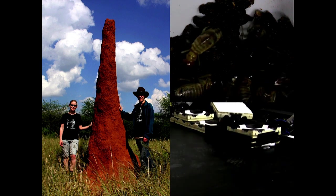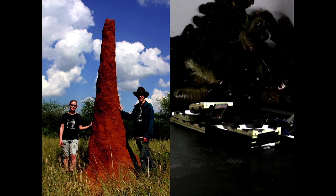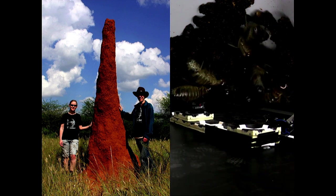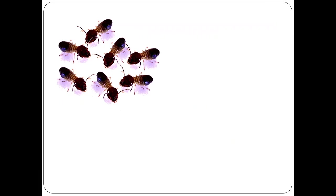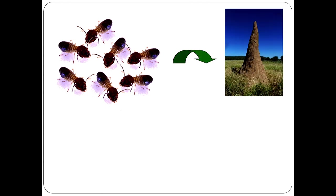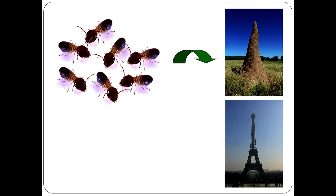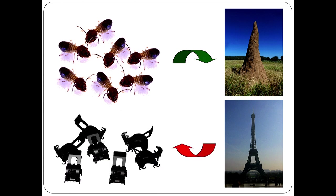So how do we engineer a system like that? How would you build and program an artificial termite colony to build whatever you ask them to build? There are two different sides to this question: the forward scientific question — given a set of agents and the rules they're following, can you predict what that's going to produce when they all build together? And then the inverse engineering question: given a particular structure you want built, can you come up with a set of rules for independent agents that will wind up producing it?